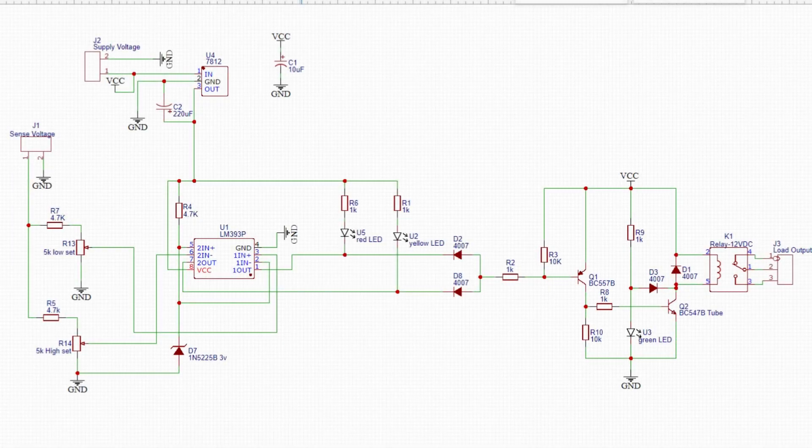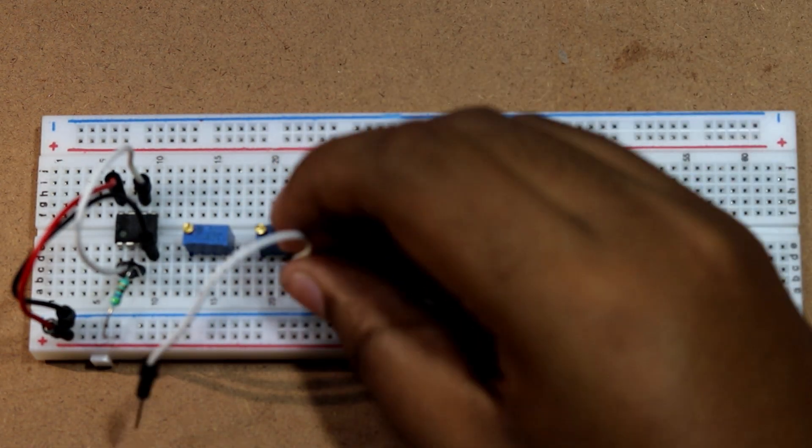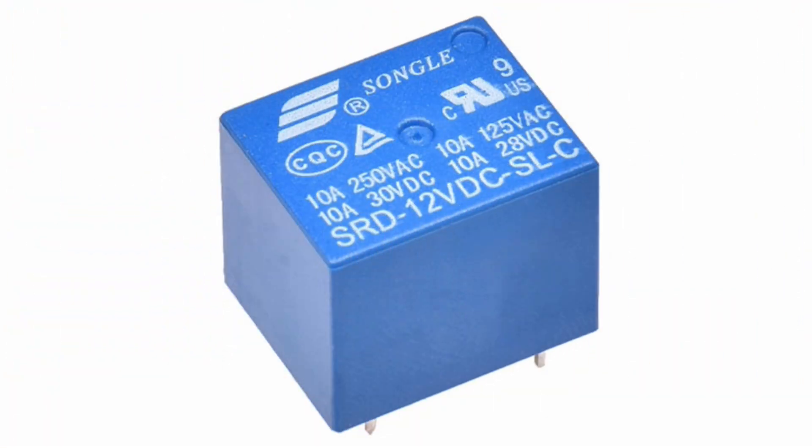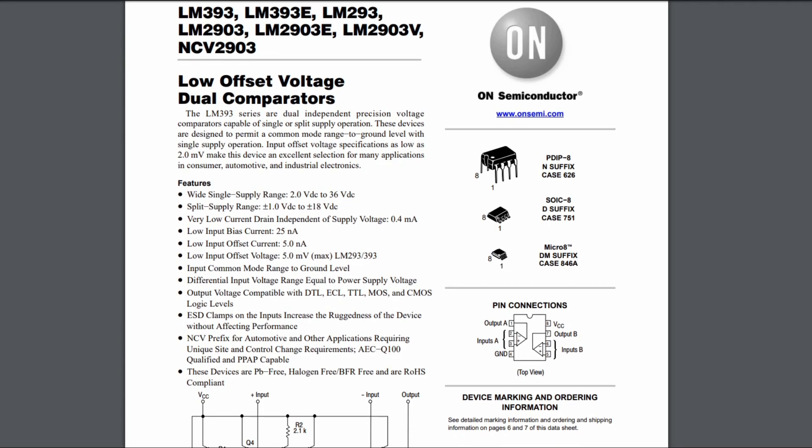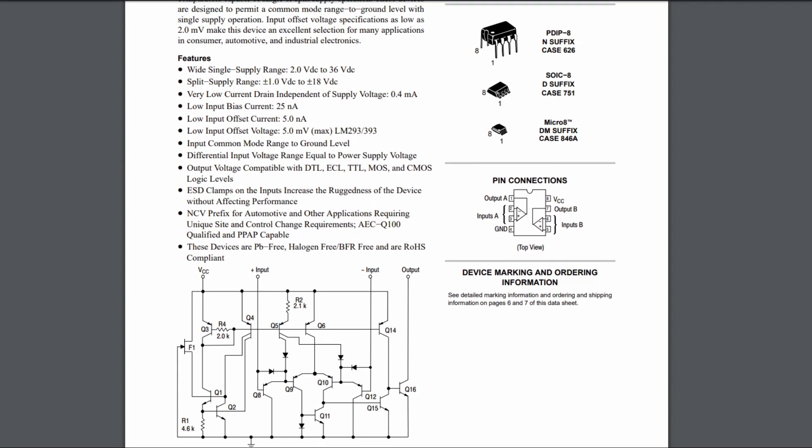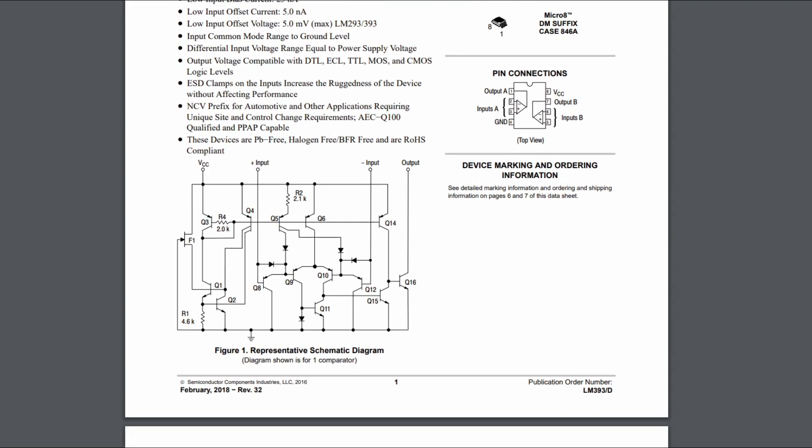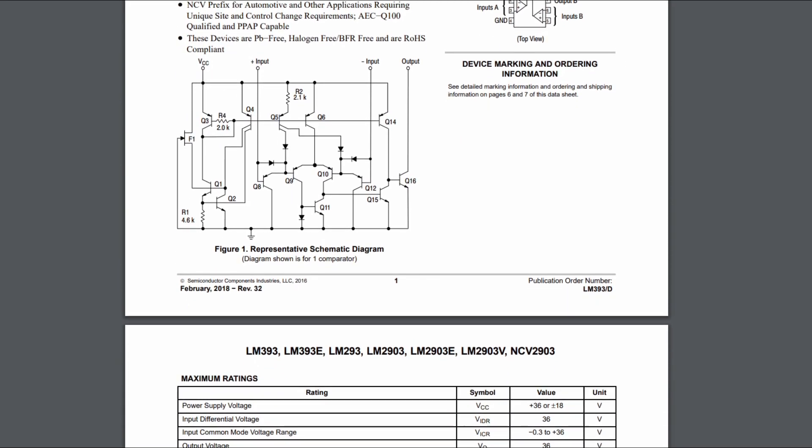Recently I was working on a project about upper and lower voltage protection circuit. The circuit turns on or off a relay according to the mains voltage. Here I have used LM393 dual comparator IC for checking the voltage if it is in certain range or not.